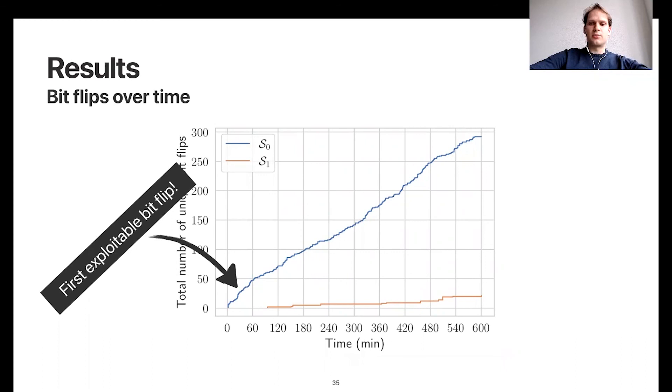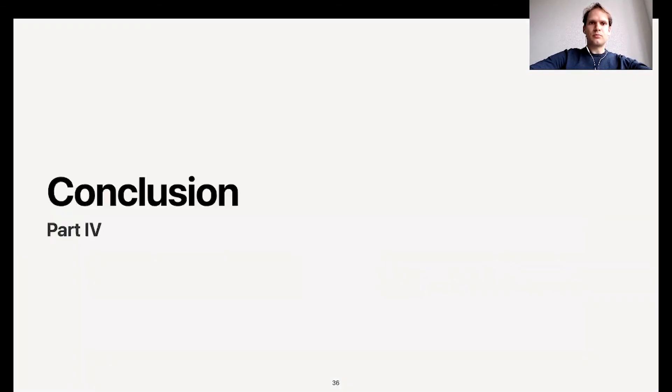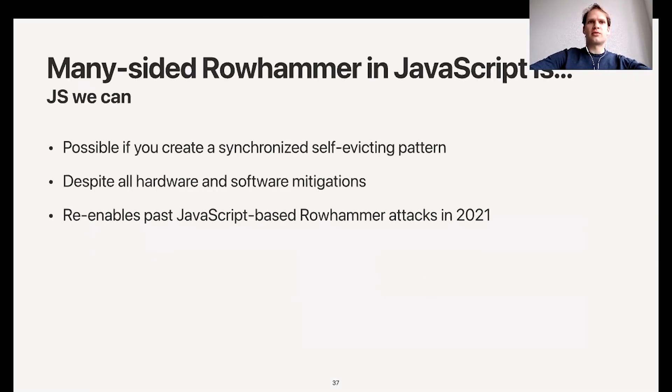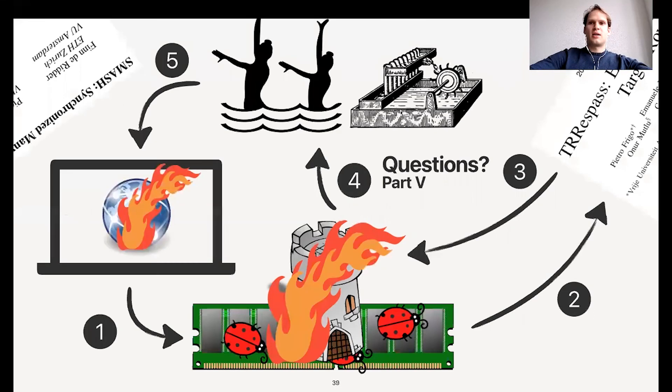The conclusion: many-sided Rowhammer from JavaScript is possible if you create a synchronized, self-evicting pattern despite all hardware mitigations like TRR and software mitigations like reduced timer precision. This re-enables past JavaScript-based Rowhammer attacks in 2021. That's my presentation. I hope this picture is clear now, and see you at the Q&A.